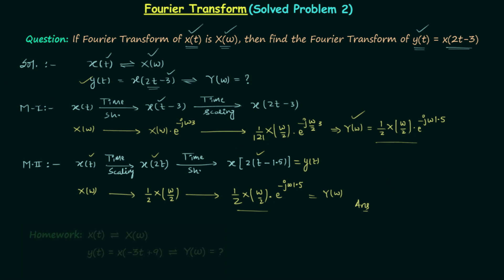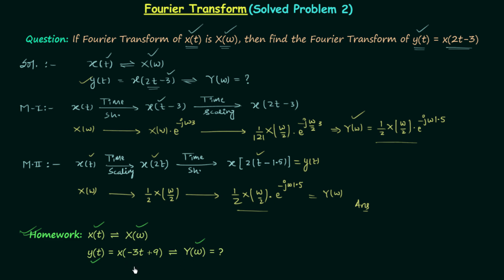Now for the homework problem: signal x(t) has Fourier transform X(ω), and signal y(t) = x(-3t + 9). You need to find the Fourier transform Y(ω). You have multiple transformations again and should proceed in the same way — you can follow either Method 1 or Method 2 and will get the same answer. Once you have your answer, post it in the comment section.